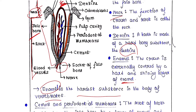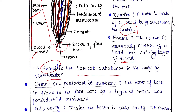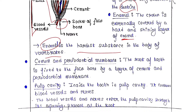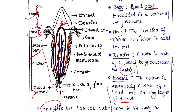Now we will see the cement and periodontal membrane. The root of the tooth is fixed to the jawbone by a layer of cement and a periodontal membrane. Here you can see the cement part and the periodontal membrane — the root is attached to the socket of the jawbone via these two structures.